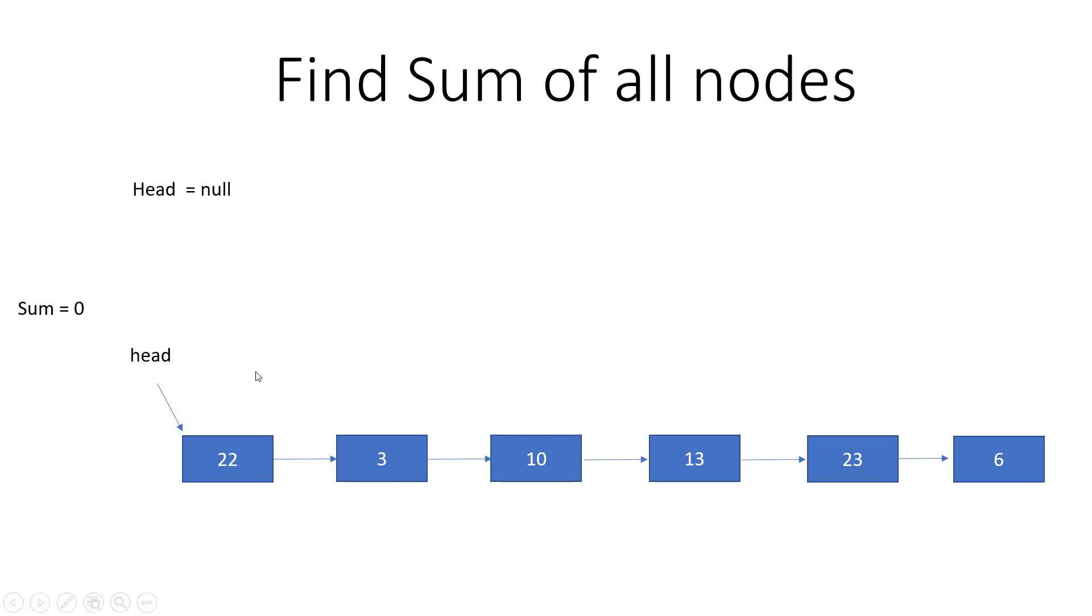What is the time complexity? We're iterating the linked list n times, in Big O of n, because we have n nodes. The space complexity is not much because we're using only a single variable, so space complexity is Big O of 1.